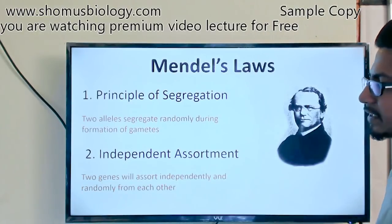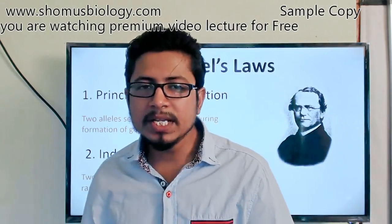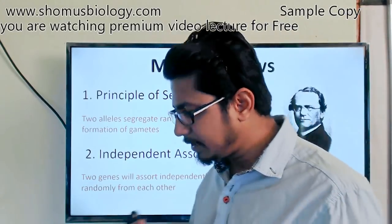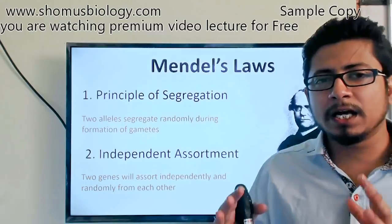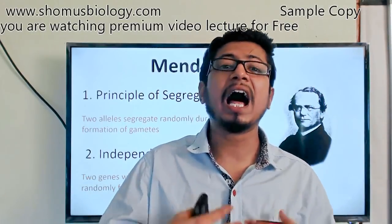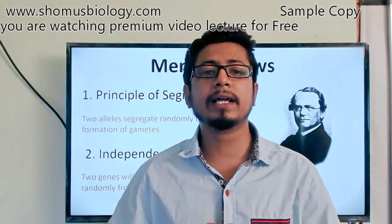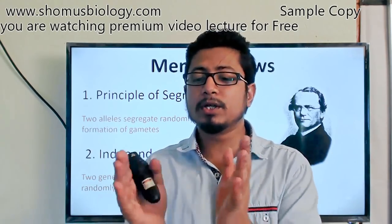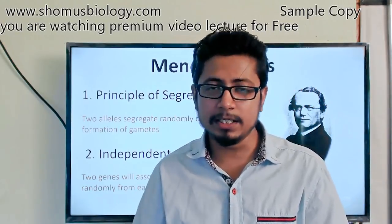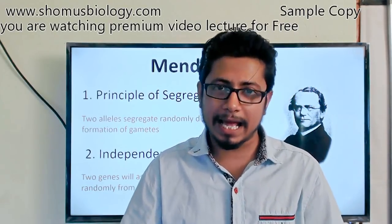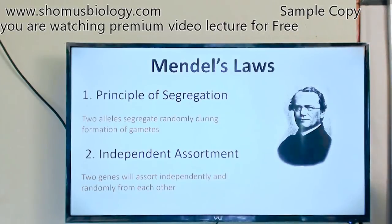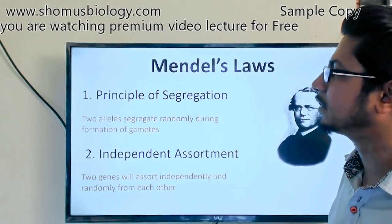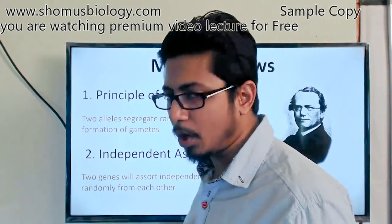The independent assortment idea states that if we consider two different traits — say, plant height (tall and short) and flower color (red and white) — during gamete formation, the height of the tree will not influence the flower color. It's not as though red-flowered trees are always tall or white-flowered trees are always short. They assort independently: the height alleles do not influence the flower-color alleles. Generally, the Principle of Independent Assortment requires two different characteristics, while segregation involves only one.